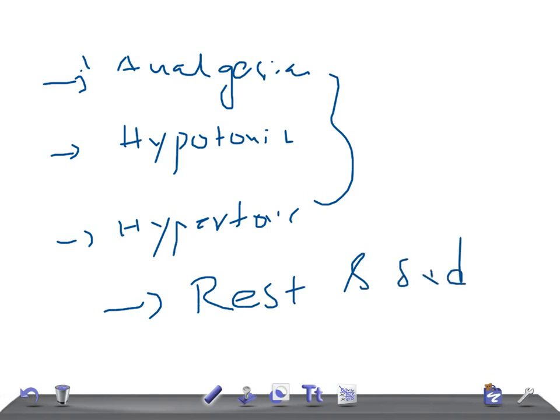This is all about prolonged latent phase. Prolonged latent phase is a patient with regular contractions, cervical dilation less than three centimeters, and no cervical change in 14 hours in multipara or more than 20 hours in primipara.